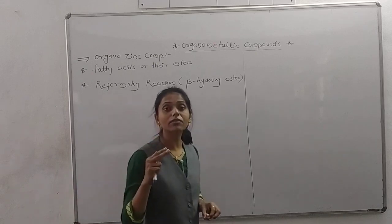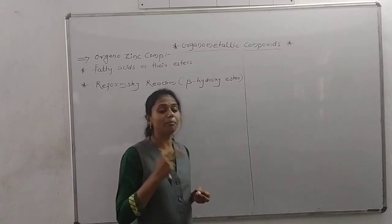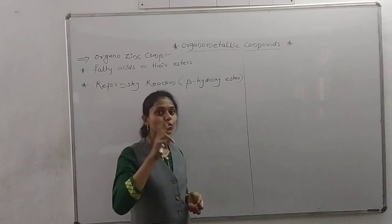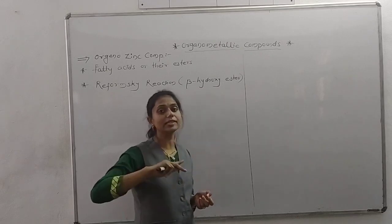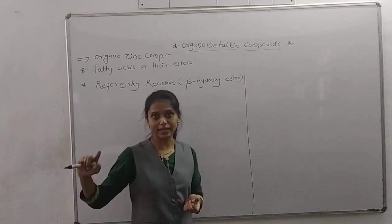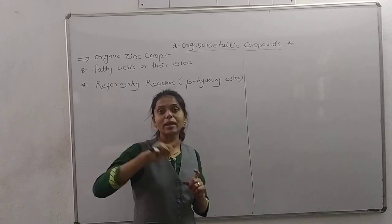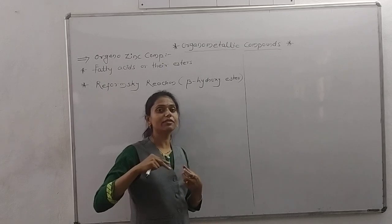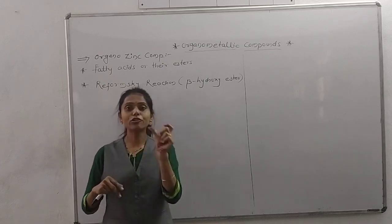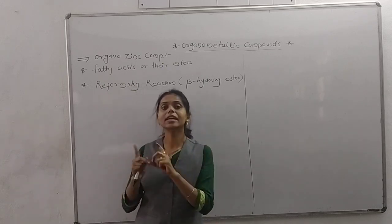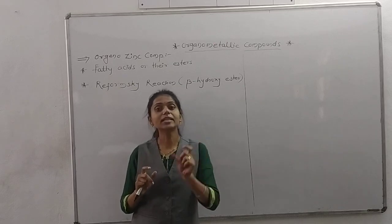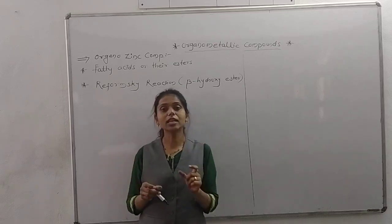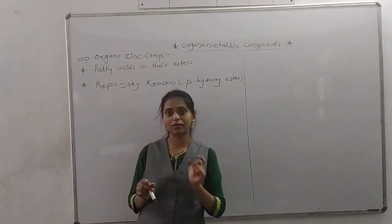First of all, we are studying the synthesis of fatty acids or esters from organozinc compounds. You know that when we prepare the organozinc compound, we are preparing two compounds. The first one is the alkyl zinc halide — for example, methyl zinc chloride. And after that, the final product we obtain when two molecules of alkyl zinc chloride are treated with each other, giving dialkyl zinc. So for this reaction we are taking alkyl zinc halide.